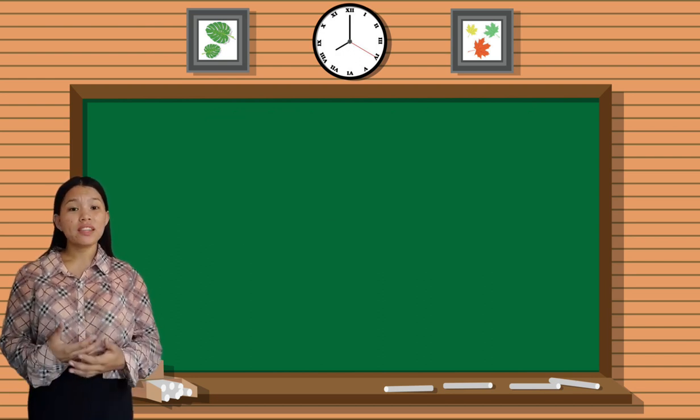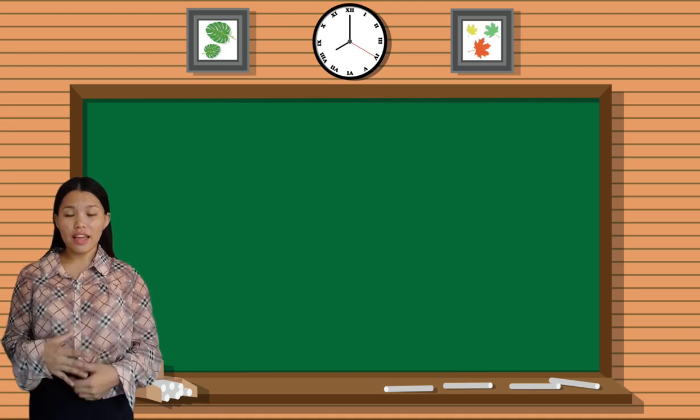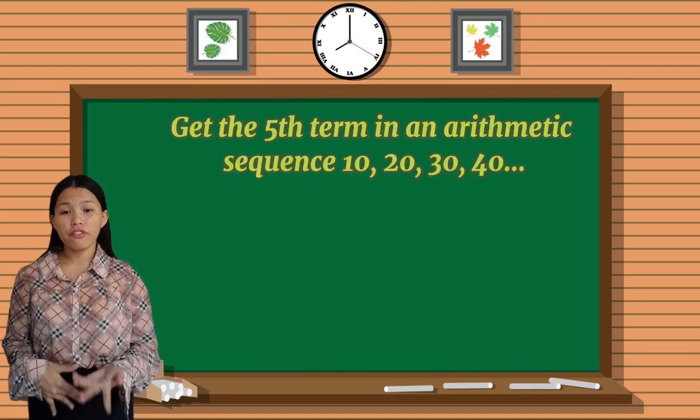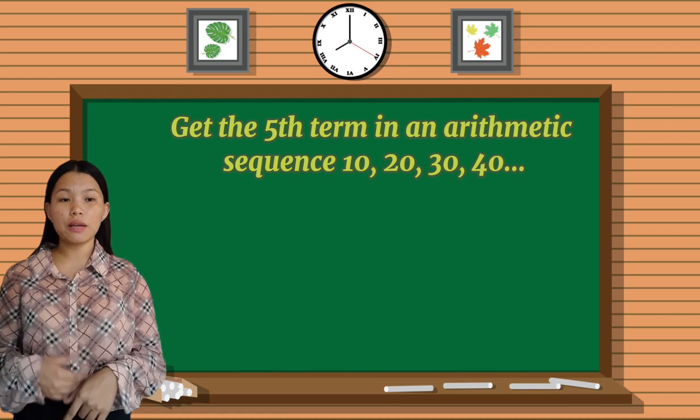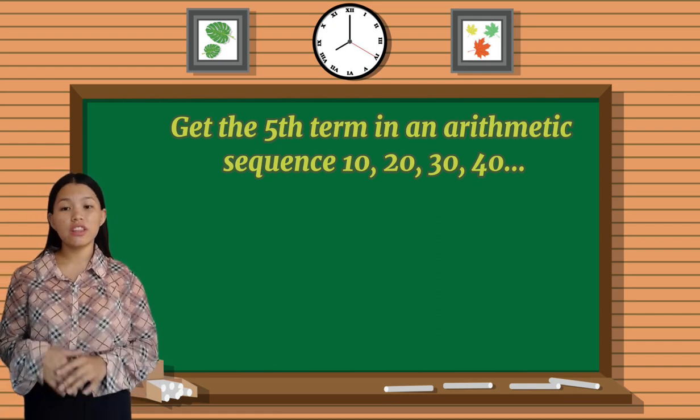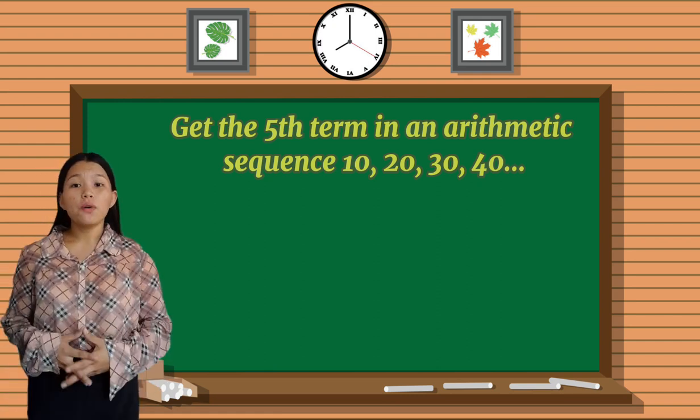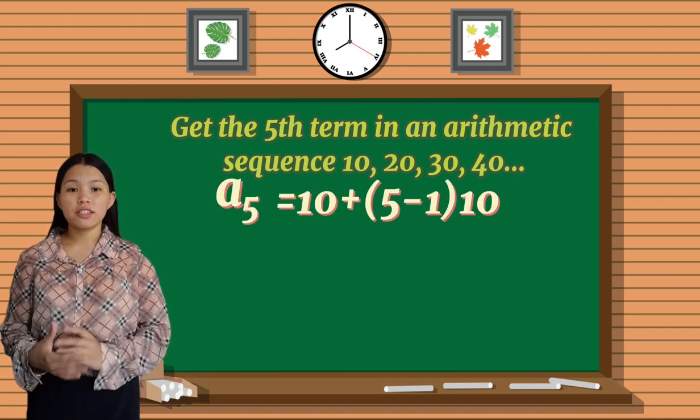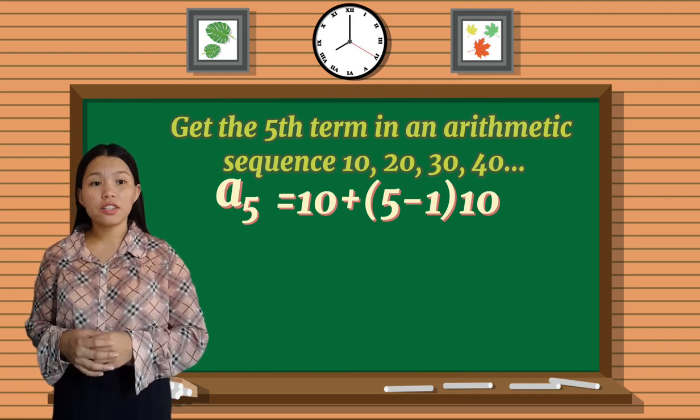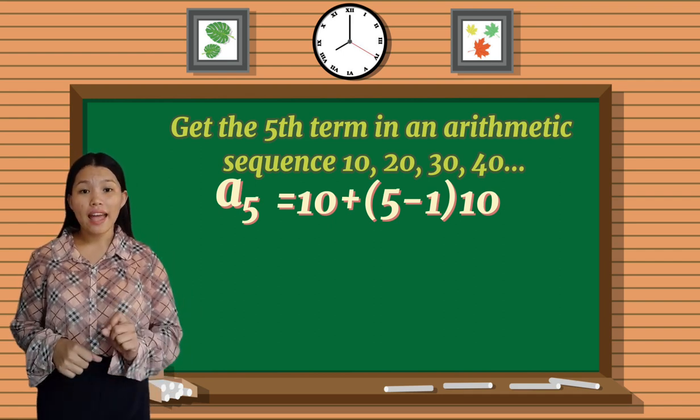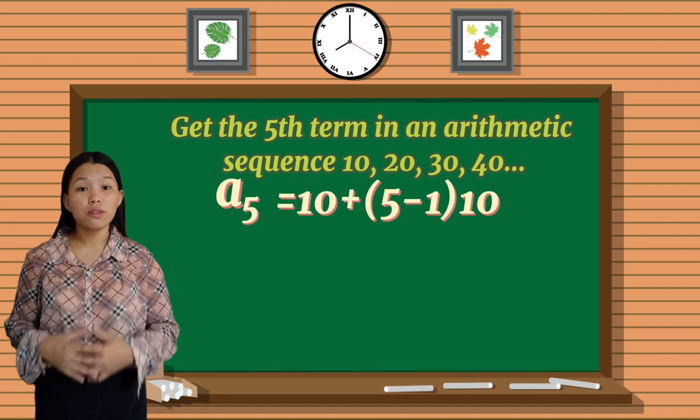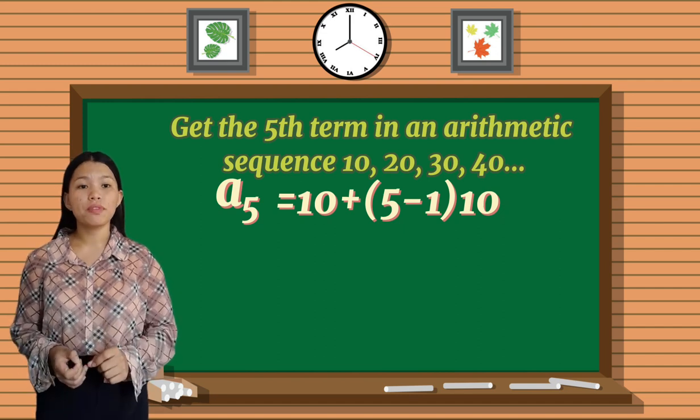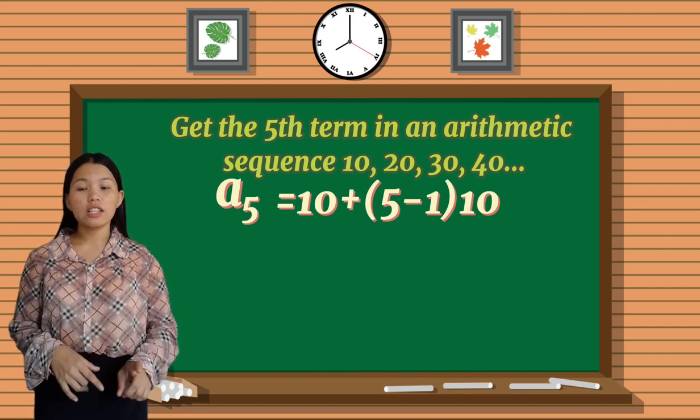Now let's use that equation to get the 5th term in an arithmetic sequence 10, 20, 30, and 40. So that's gonna be a_5 = a_1, which is the first term, and the value of the first term is 10 plus n is 5, since we are looking for the 5th term, minus 1 times 10, which is the common difference.